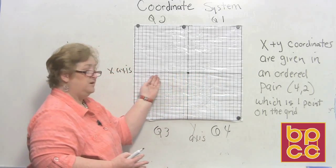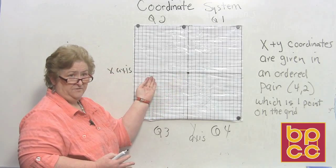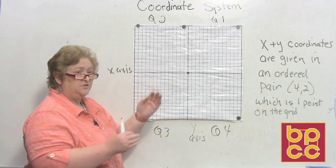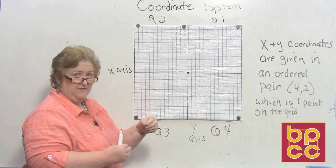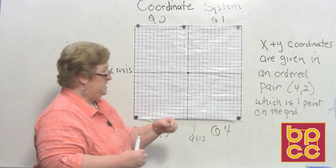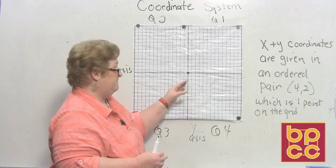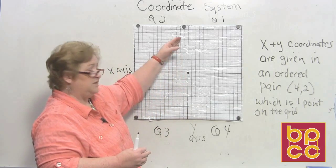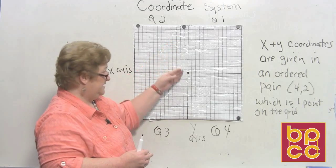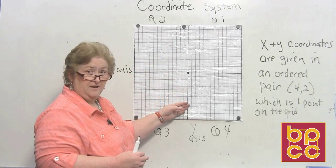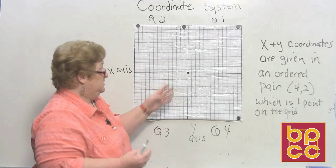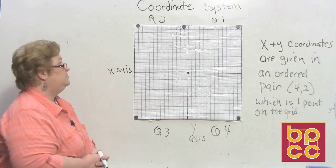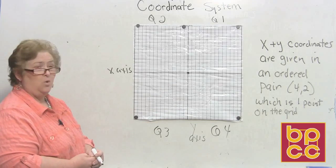The x goes horizontally, so if x is positive we go to the right; if it's negative we go to the left. We don't stop and put a point there — it's the two values that come together to make the point. For y, positive goes up and negative goes down.